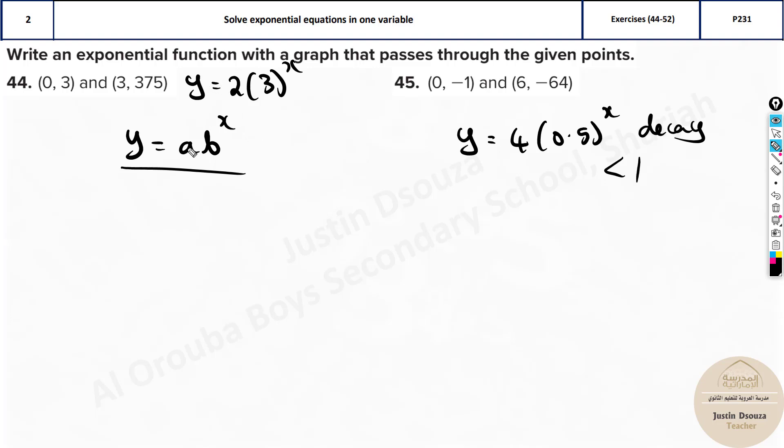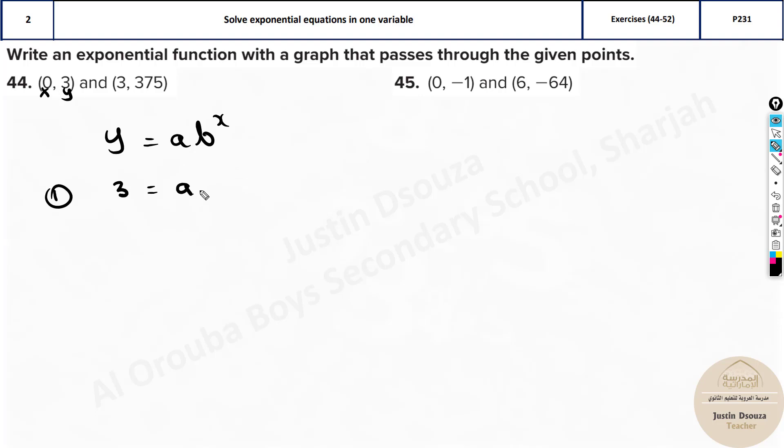Now coming back to this type of problem. How can we find a and b? So we need to use both these points. We have this equation y equals a to the power b x. So in step 1 you must always first use the point which is having 0. If this was given first and then 0,3 then use the point which is having 0. That is most important.